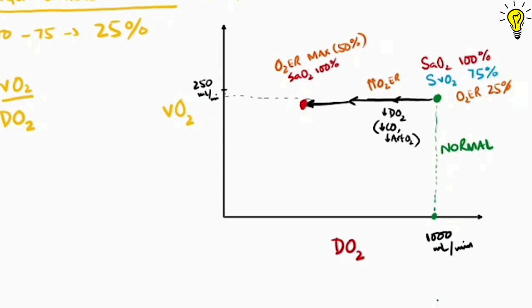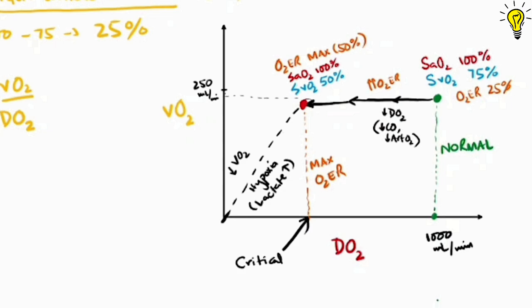Now beyond this point, the oxygen consumption becomes supply dependent. So further reduction in delivery would also reduce the consumption of oxygen and shift the balance towards anaerobic metabolism, in other words hypoxia and rising lactate levels. This point of delivery is called the critical delivery point, and physicians can observe it either by mixed venous oxygen saturation or lactate levels.